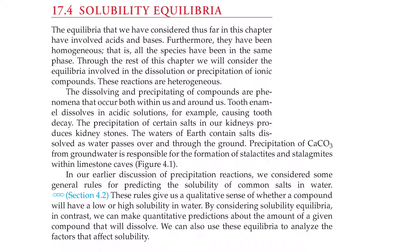Section 17.4, Solubility Equilibria. The equilibria we've considered thus far in this chapter have involved acids and bases. Furthermore, they've been homogeneous — that is, all the species have been in the same phase. Through the rest of the chapter, we'll consider the equilibria involved in the dissolution or precipitation of ionic compounds. These reactions are heterogeneous.